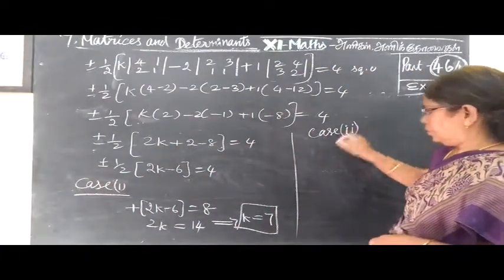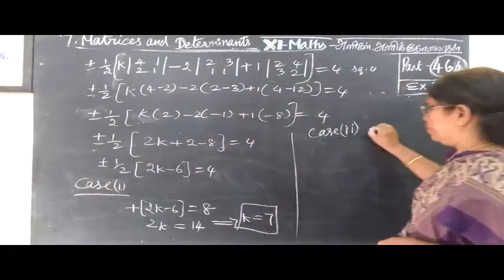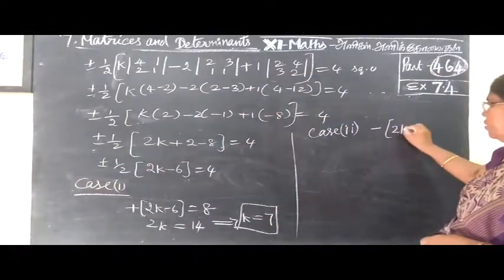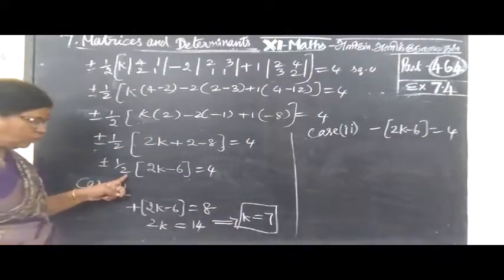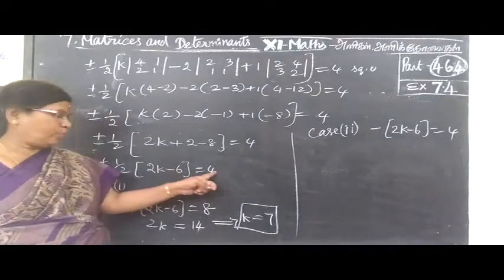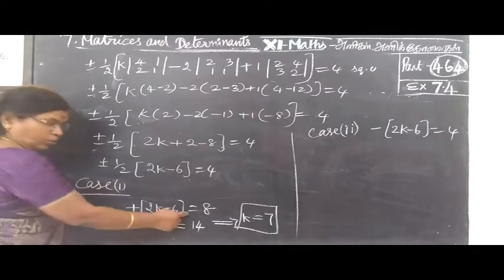The answer is plus or minus. So minus 2K minus 6 equals to 4. So hope you understand. 2K is equal to 8. 1 is equal to no need to write. Plus is equal to 1 bracket.